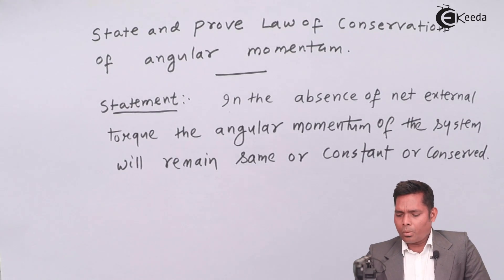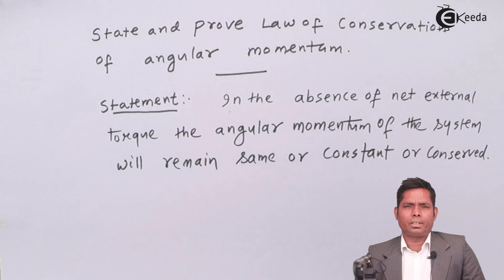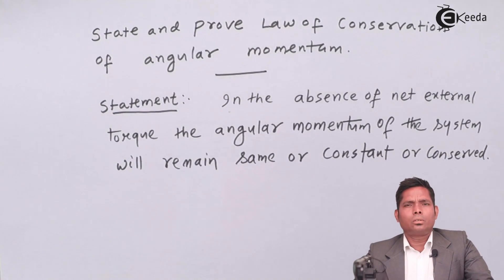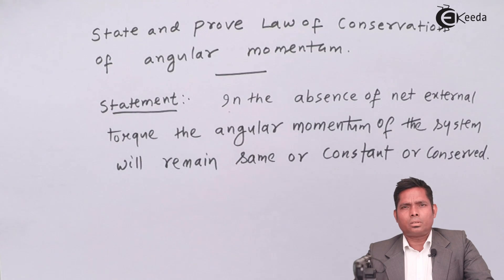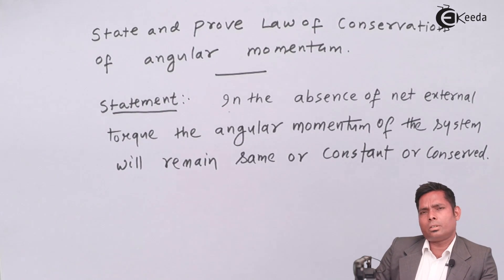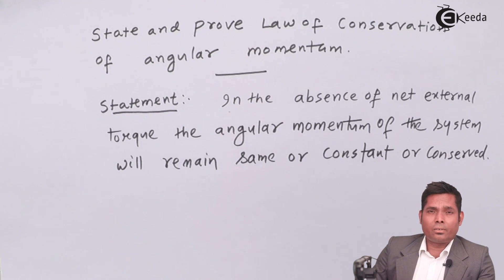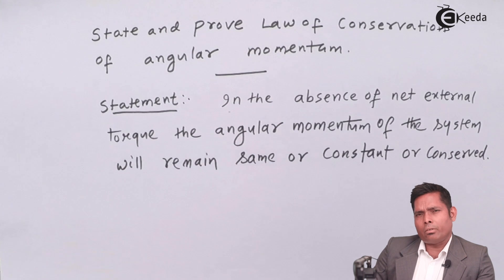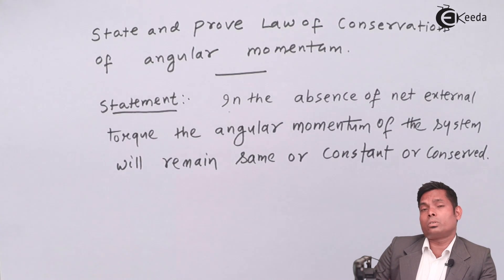Why is it about the absence of net external torque? Because angular momentum — the formula we derived in the last video was L = Iω. For L to be constant with time, I and ω both have to be constant. I has to be constant about a particular axis of rotation. It doesn't depend on how fast the object is rotating; it only depends on the body and the given axis. As long as the given axis is fixed, the moment of inertia will remain constant.